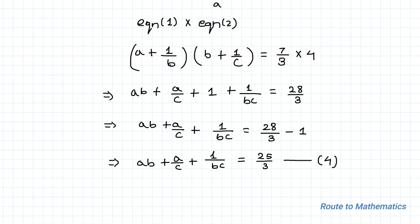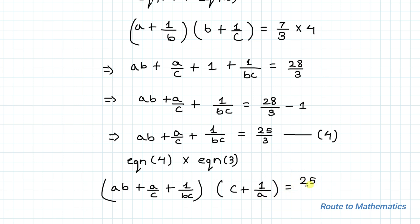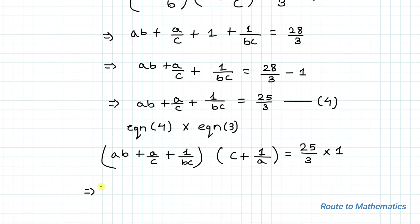In the next step, we multiply Equation 4 with Equation 3. So (ab + a/c + 1/b + 1/(bc)) multiplied by (c + 1/a) equals 25/3 × 1.